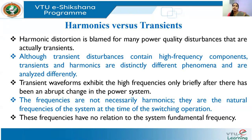Transients are caused by sudden or abrupt changes in the system. Even though transient waveforms exhibit high-frequency components, these frequencies are not necessarily harmonics — they are not generally integer multiples of the fundamental frequency. They may be very random in nature and have no relationship to the system fundamental frequency. Harmonics, by definition, must be integer multiples of the fundamental frequency.